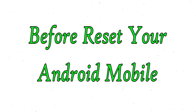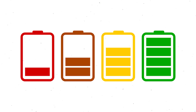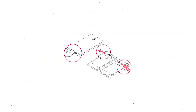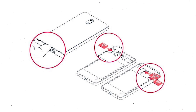Before resetting your mobile, make sure the battery is properly charged. If it is less than 50%, charge your mobile first. You need to make sure that the data on your device is backed up so you do not lose valuable photos or documents. Reset deletes all your mobile data, so it is better to back up all important data and remove the SIM and SD card.